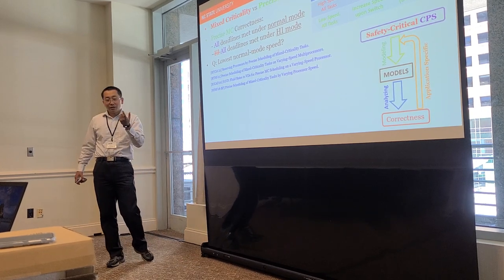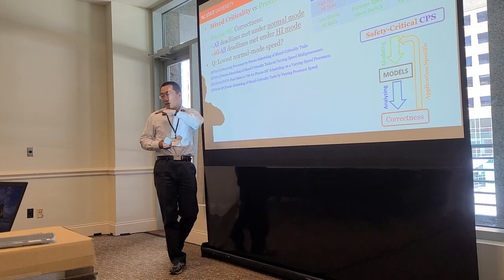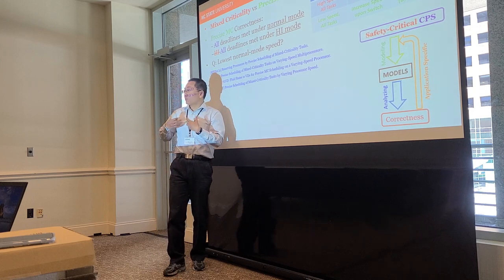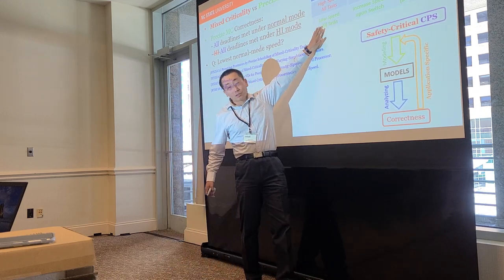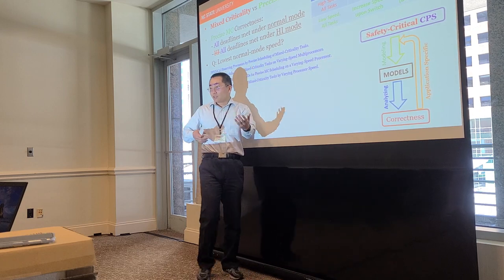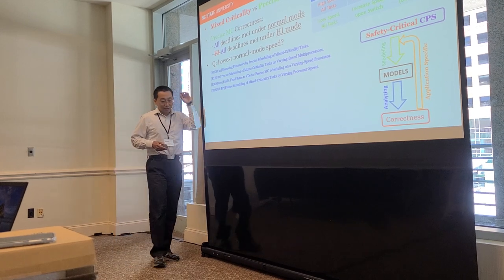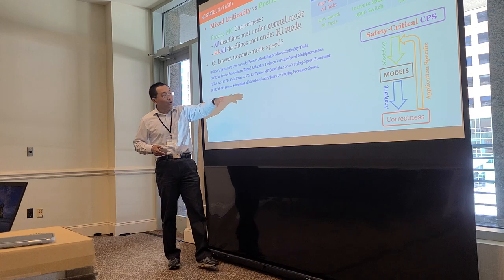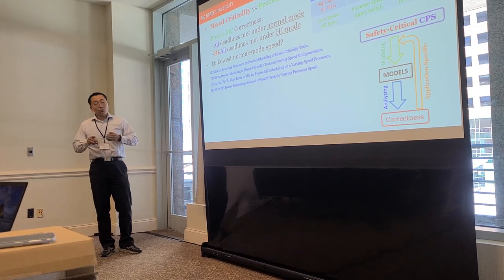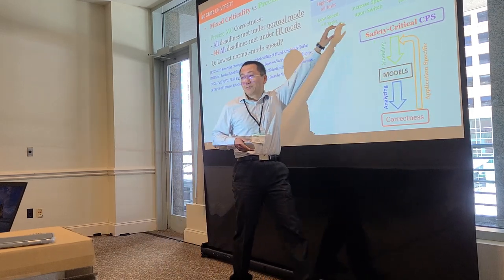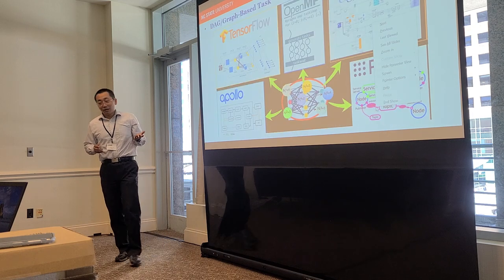Now it becomes a more energy-efficient design for real-time systems, where in normal mode you want to run everything as slowly as possible, but if some important tasks overrun, you increase your processor speed to the normal level so it can accommodate the additional workload. We looked into this problem and found several interesting results: we can convert the EDF schedule into a deadline-based schedule without losing optimality, and we're able to show this extends to multi-processor and even heterogeneous processors. However, whether this new problem is NP-hard remains an open problem.